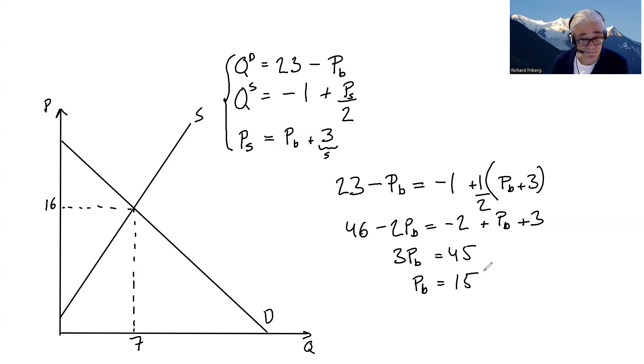We know that the price that buyers are paying is 15, lower than the equilibrium price. That is 15, the price that buyers are paying.